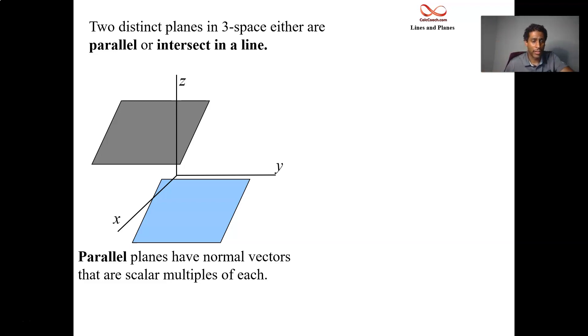You see, the normal vector to the gray plane and the normal vector to the blue plane, one is a constant multiple of the other if the two planes are going to be parallel.